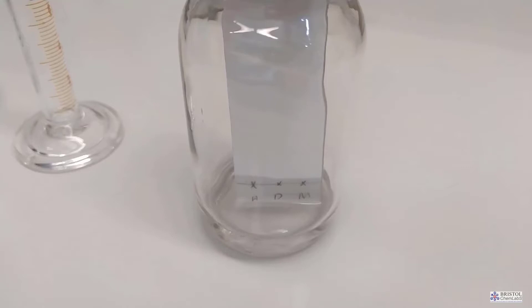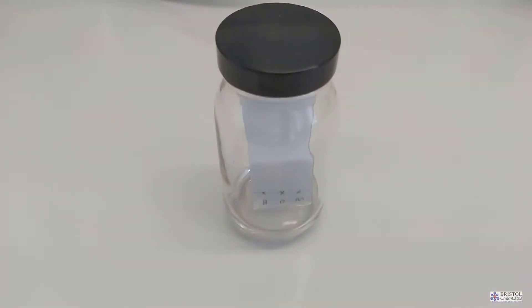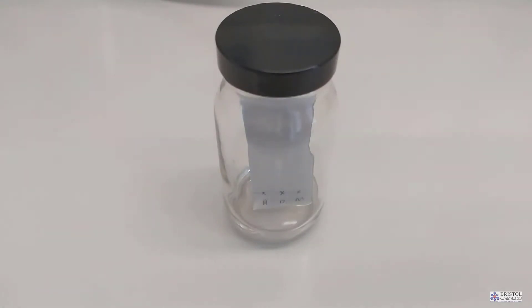As soon as the solvent front gets near to the top of the plate we unscrew the jar, take out our sample and immediately mark the position of the solvent front. If you wait more than a few seconds it will start evaporating and you won't know exactly where the solvent has got to. We would need to know where the solvent has got to if we were making calculations of RF values.